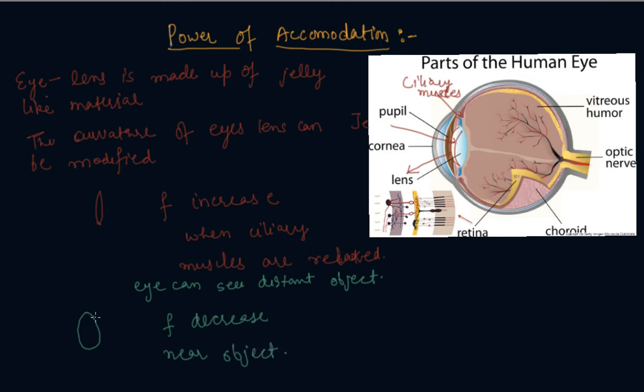Students, so this is our eye lens which I am showing here, and this is also eye lens. So when our ciliary muscles are relaxed, focal length increases, and when they contract, focal length decreases, and this enables us to see the near or distant object.